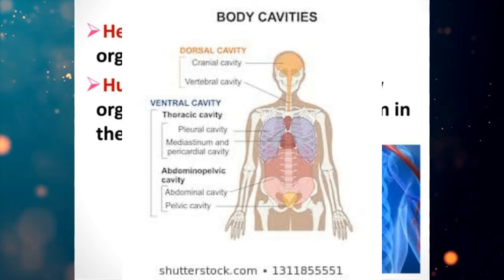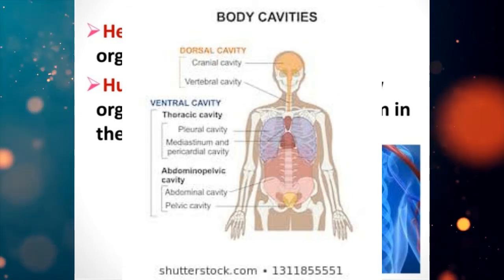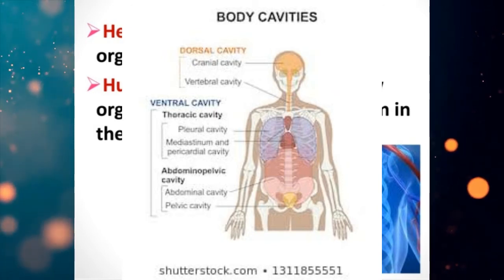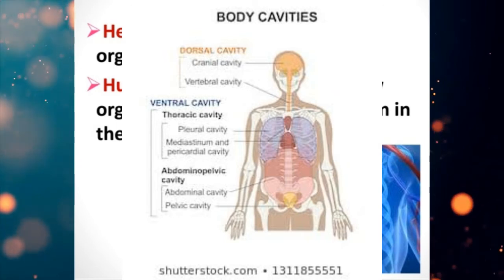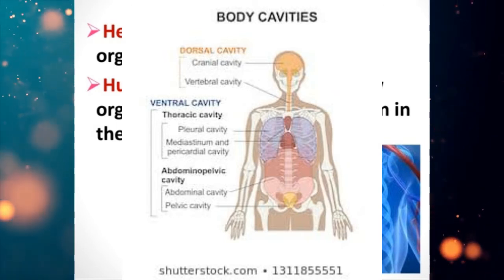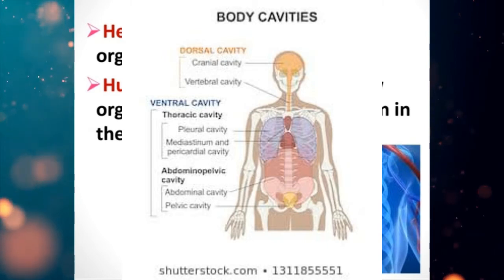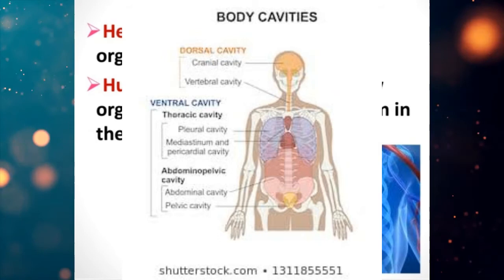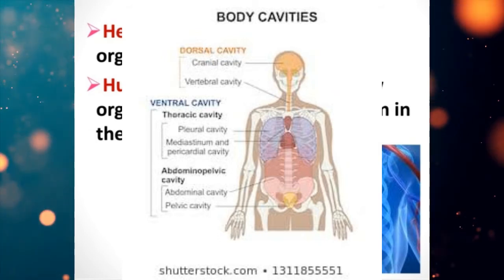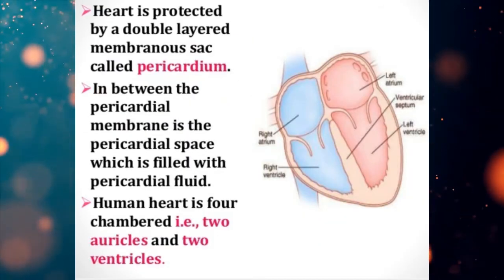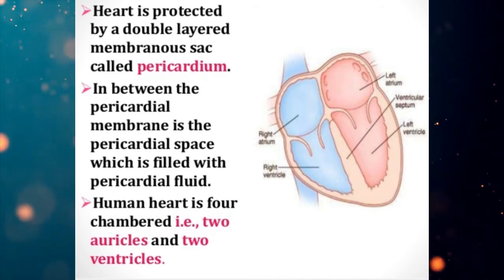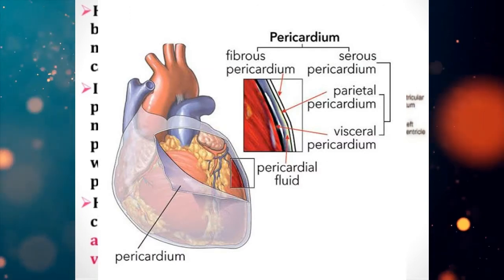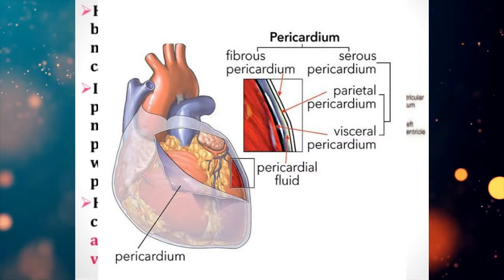Our body is divided into different cavities. The upper body part has the thoracic cavity, which contains the heart and lungs, while the lower abdominal cavity contains the digestive system and reproductive system. The size of the heart is roughly that of our closed fist.